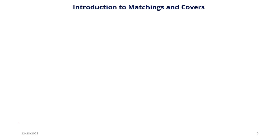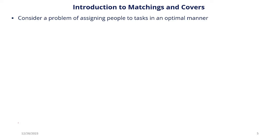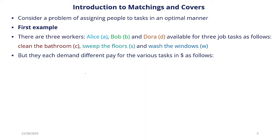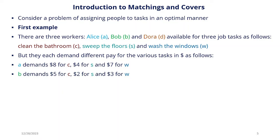We begin with Introduction to Matchings and Covers. Consider a problem of assigning people to tasks in an optimal manner. Suppose there are three workers — Alice (A), Bob (B), and Dora (D) — available for three job tasks: clean the bathroom (C), sweep the floors (S), and wash the windows (W). Each of them demands different pay for the various tasks in dollars: A demands $8 for C, $4 for S, and $7 for W; B demands $5 for C, $2 for S, and $3 for W.